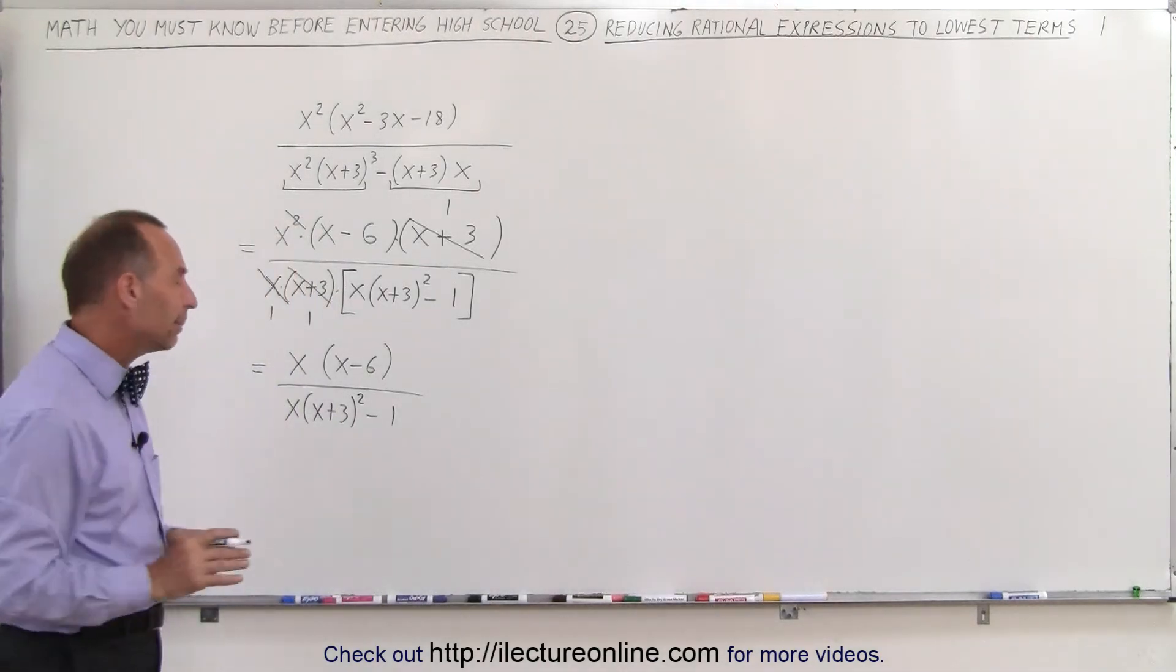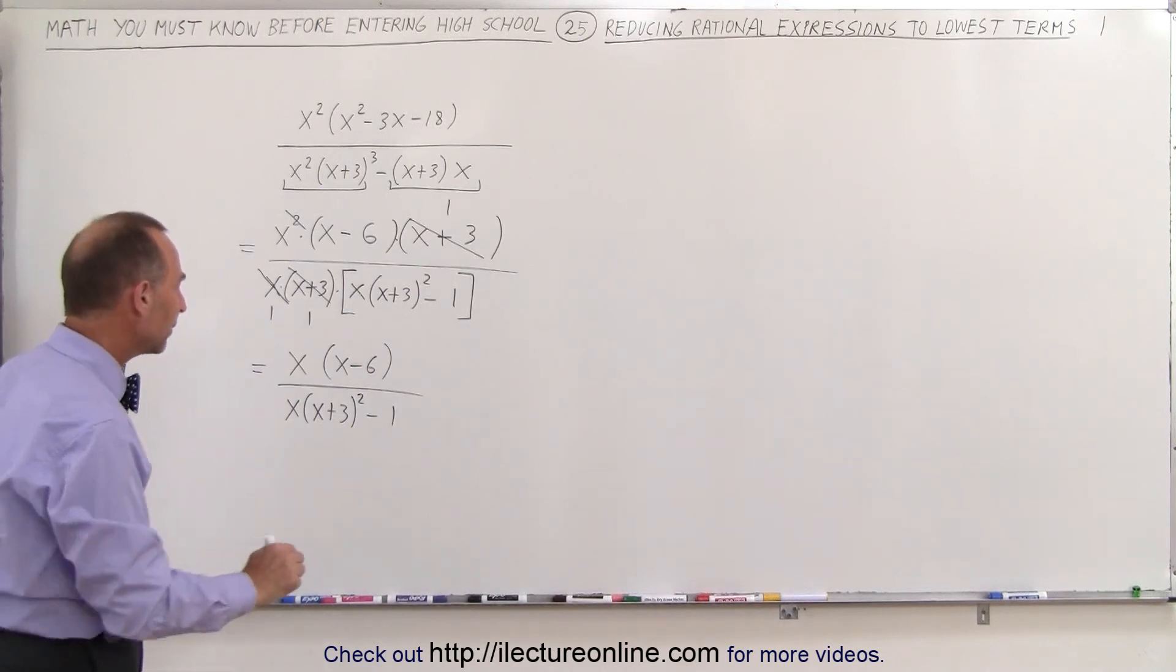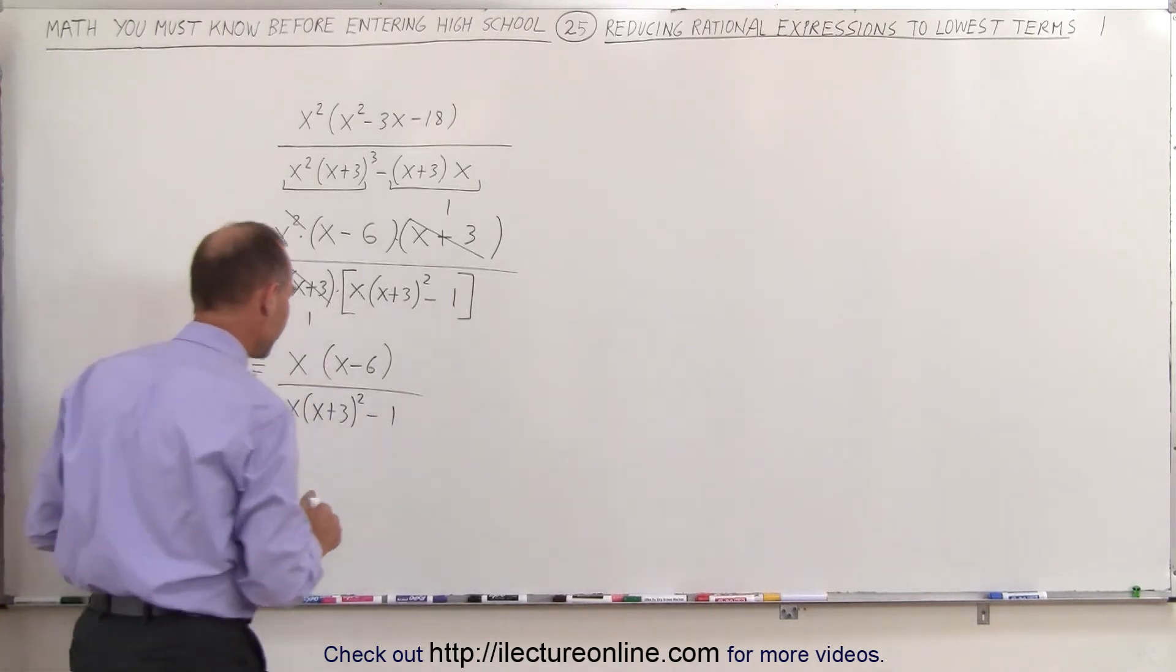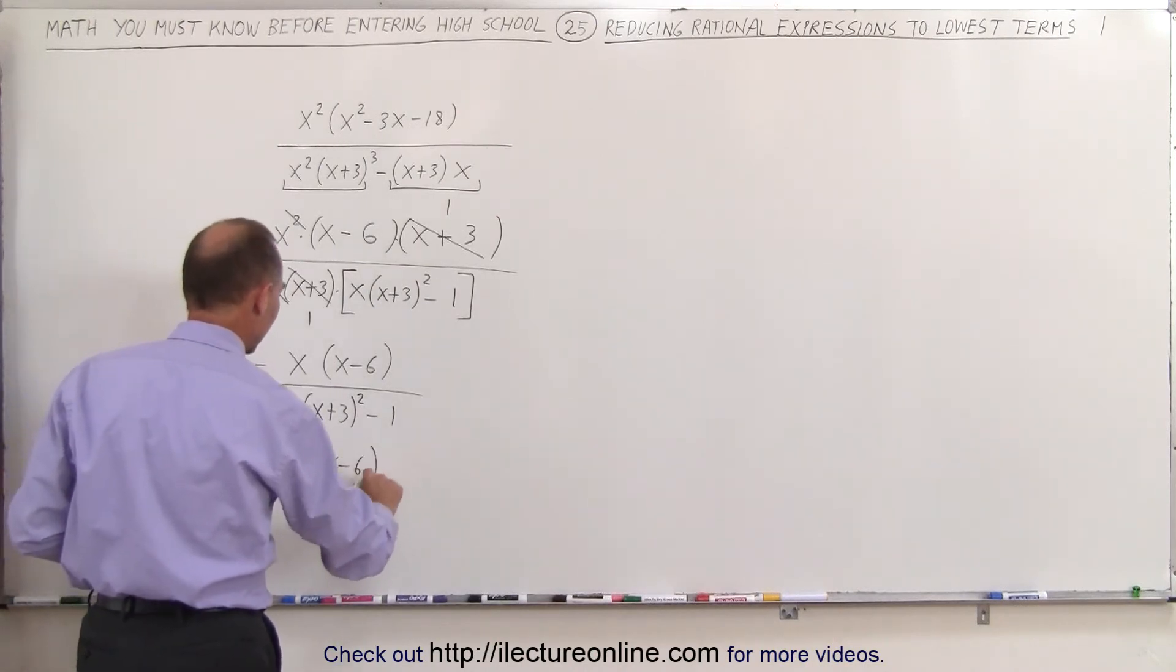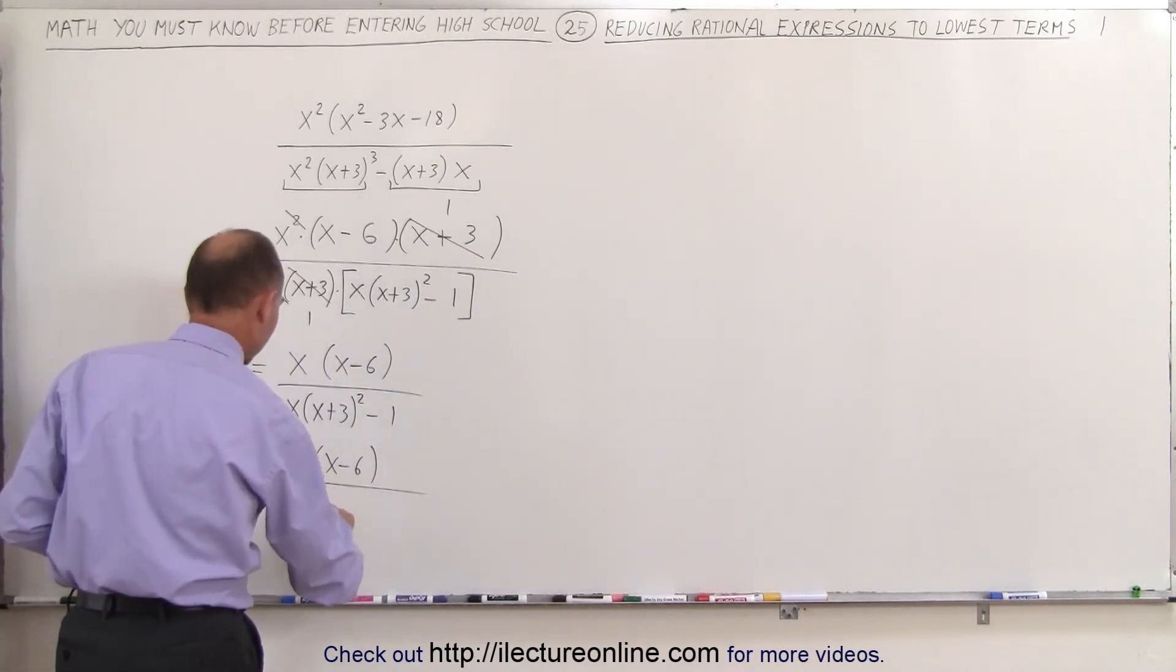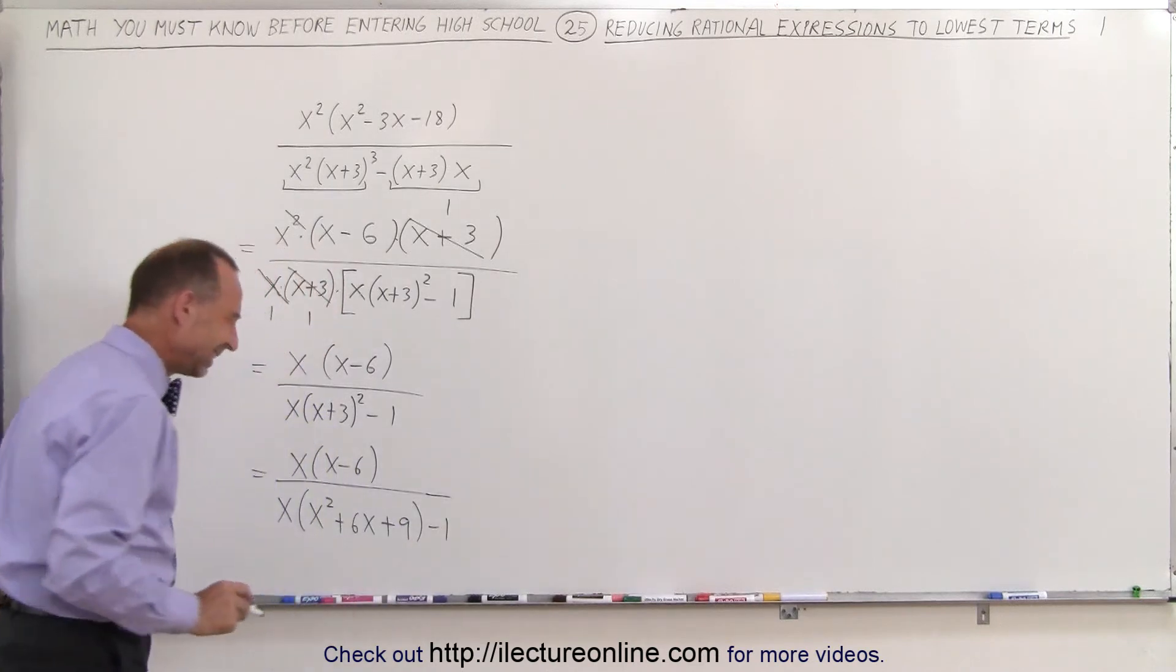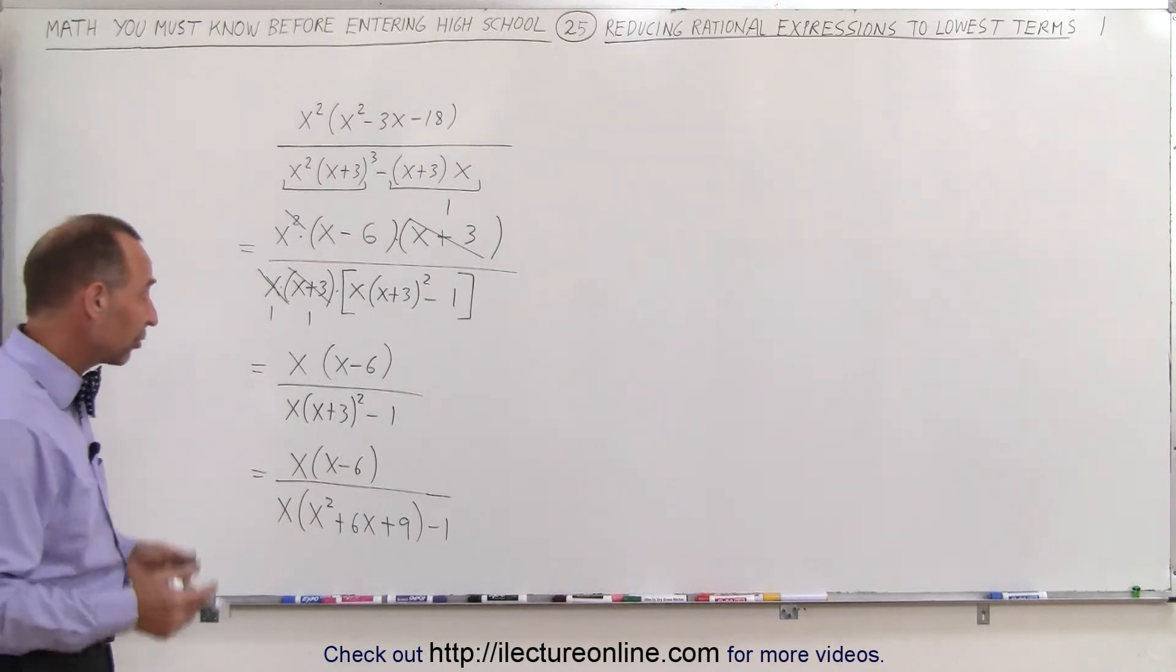Now we're not quite done yet, because perhaps we can factor the denominator even more. So I'm going to do that by multiplying this together, and then subtracting 1 from it, and then see if I end up with something I can factor so I can simplify things even more. It's not looking very good. I don't think when I multiply all this together that I can factor it out, but let's go ahead and see what happens.